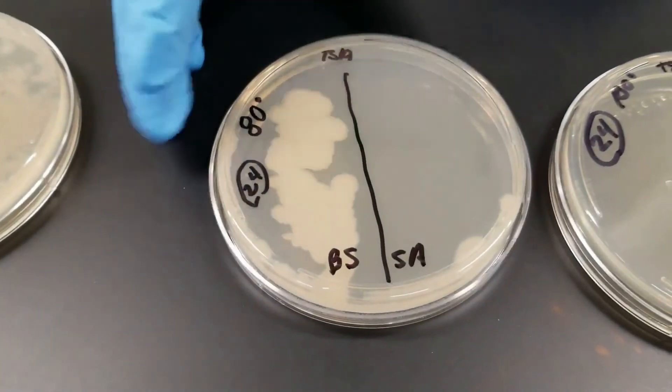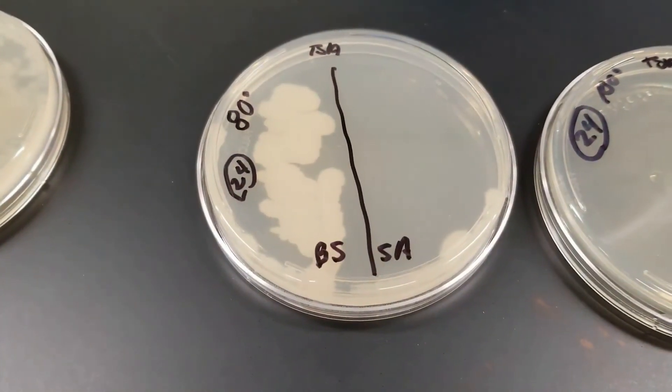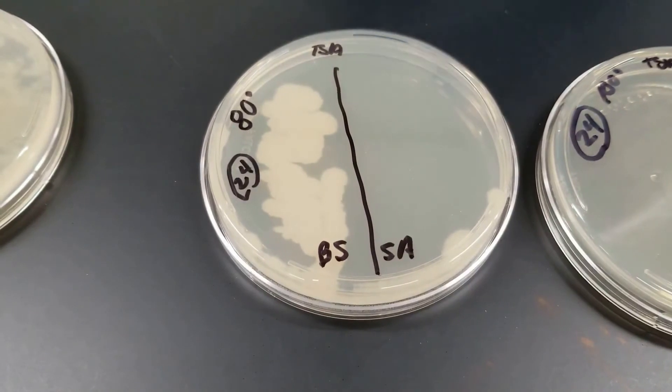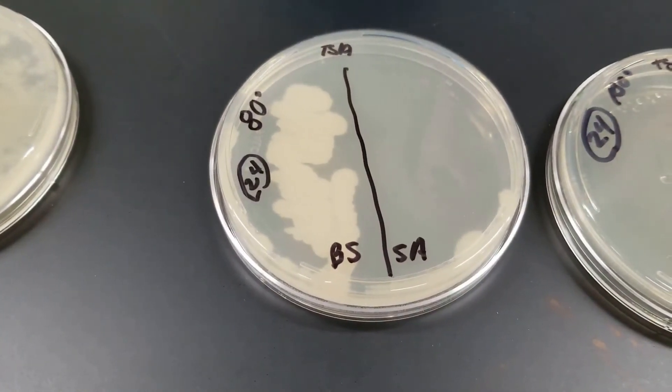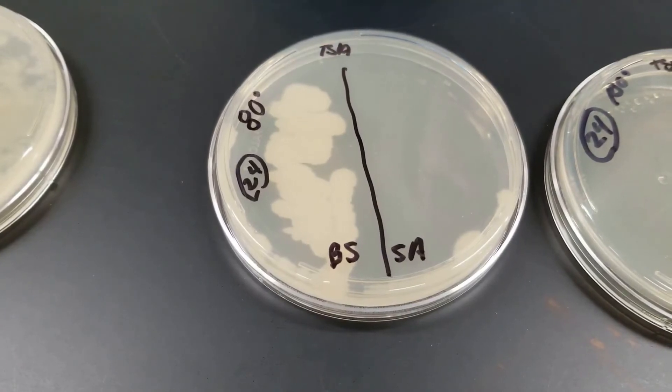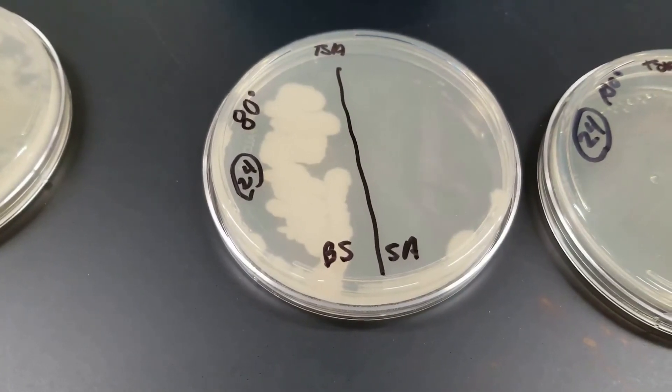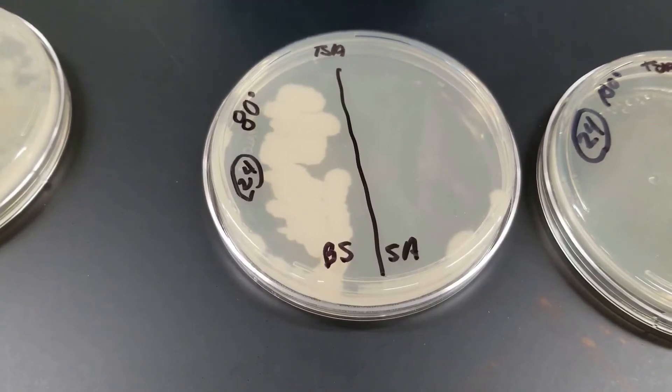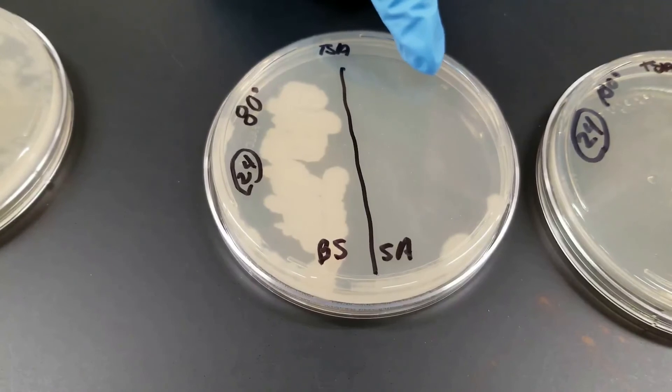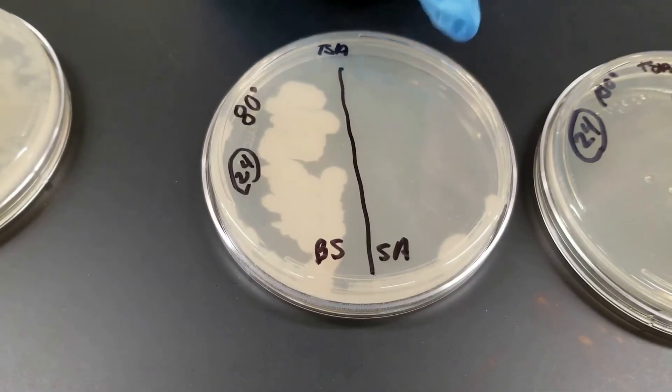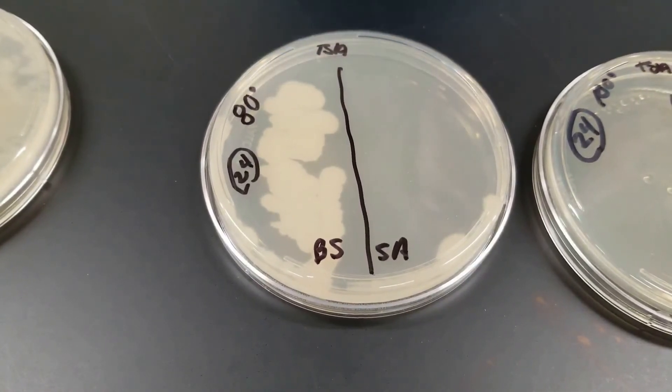This third plate is at 80 degrees Celsius for 10 minutes. So the cultures, once again, were put in a water bath at 80 degrees for 10 minutes and then streaked on the plate. As you can see here now, you're seeing the difference between the two bacterial species. Staphylococcus aureus did not grow at all. At 80 degrees, it was killed.